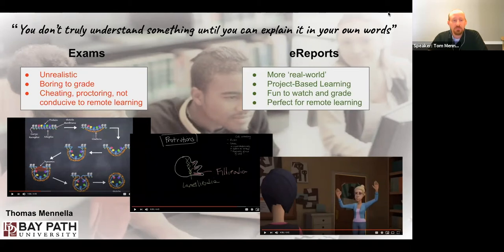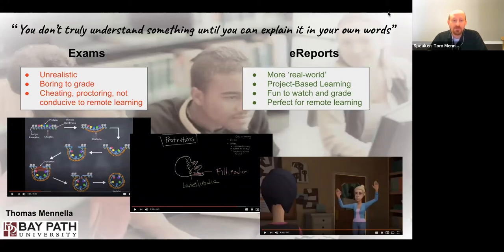At the bottom of the screen are three screenshots from some of the best e-reports that have come across my desk. On the left is a beautiful representation of the formation of a clathrin-coated vesicle from my cell biology course — the student created some of the best visual representations of clathrin-coated vesicles and pits I've seen anywhere, even compared to textbooks. In the middle, a student used a Khan Academy approach to describe and illustrate how cells crawl in an actin-independent fashion, narrating and drawing in real time.